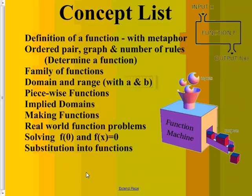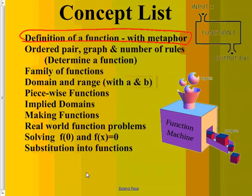Today we are talking about the review for chapter 2. The first thing is description of a function with a metaphor. The whole topic is basically about functions - the domain and range of functions, how you can tell if something is a function. That's the main stuff on this test. We also have special functions called piecewise functions, which I describe as Franken functions.